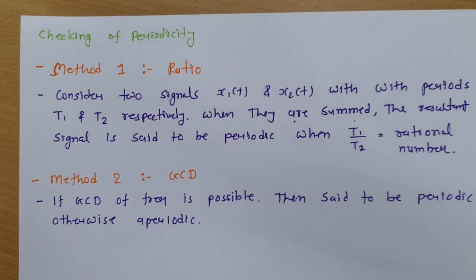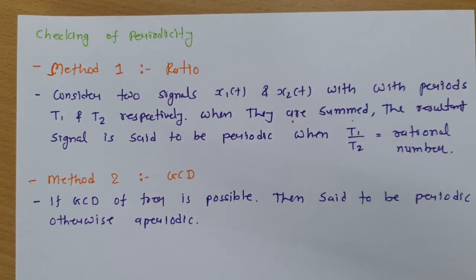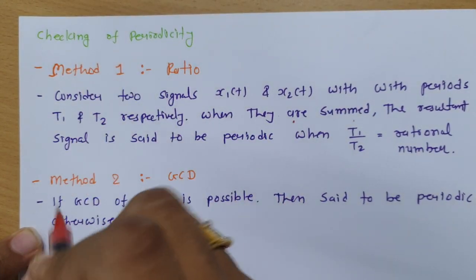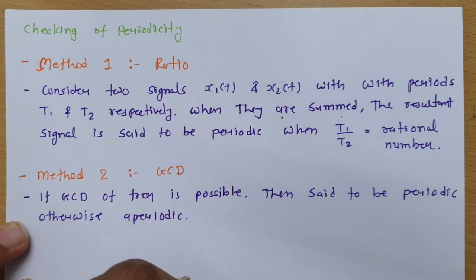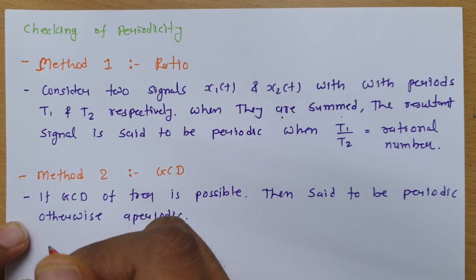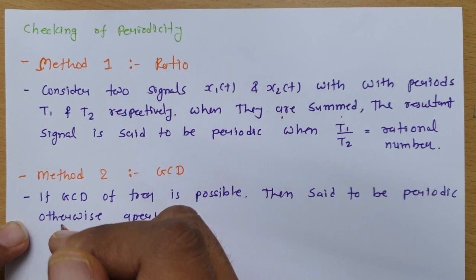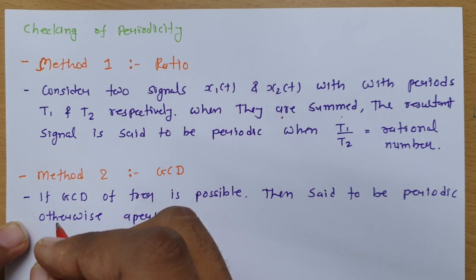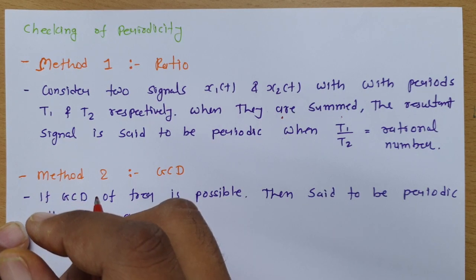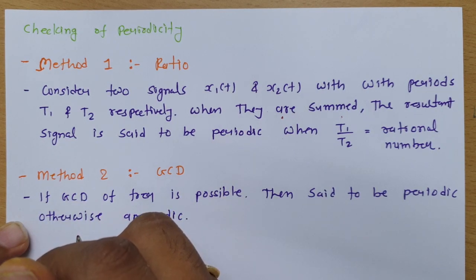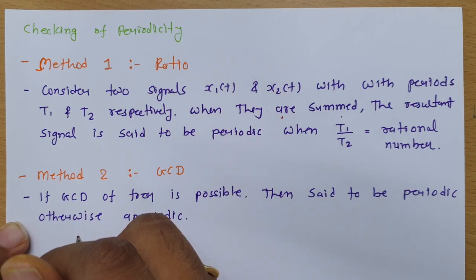Welcome to the Signal and System lecture series. In this session, I'll be explaining checking of periodicity. In the previous session, we discussed periodic and aperiodic signals, and at the end of that session I mentioned that when you add two periodic signals, that addition may result in a periodic or aperiodic signal. So here we'll be checking whether the algebraic addition of two signals results in a periodic or aperiodic signal.